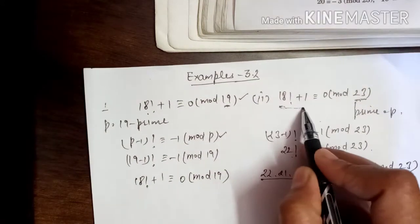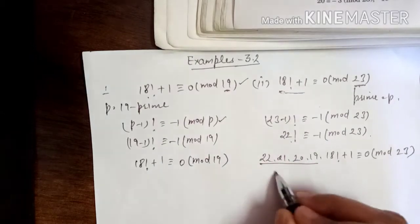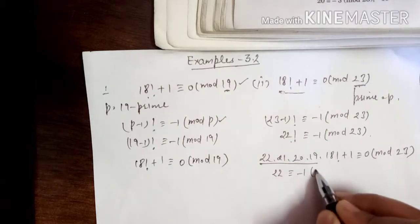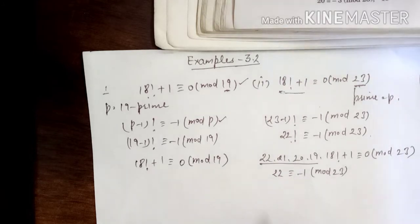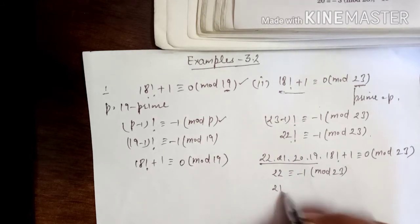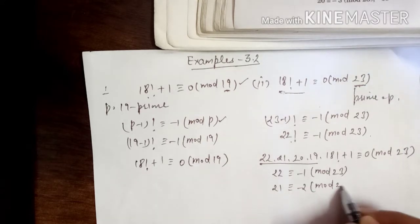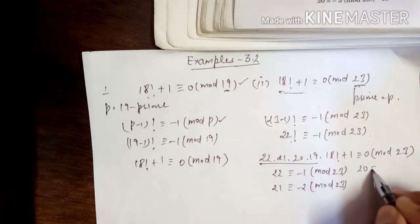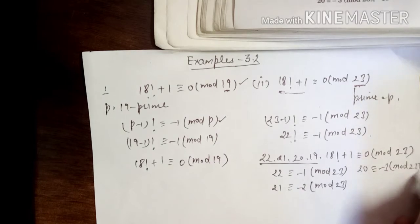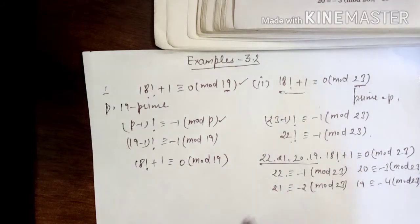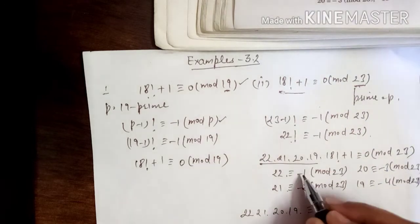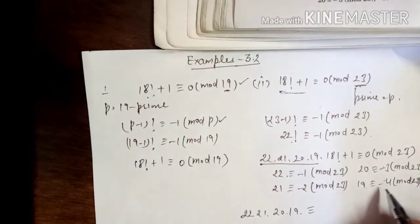Now, 22 ≡ -1 (mod 23), 21 ≡ -2 (mod 23), 20 ≡ -3 (mod 23), and 19 ≡ -4 (mod 23). So we take the product: 22 × 21 × 20 × 19 ≡ (-1)(-2)(-3)(-4) = 24 (mod 23).